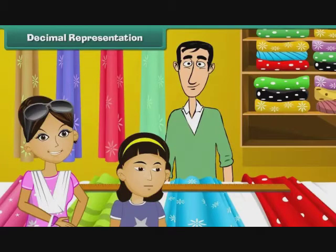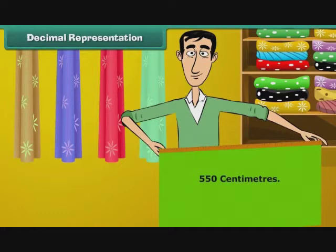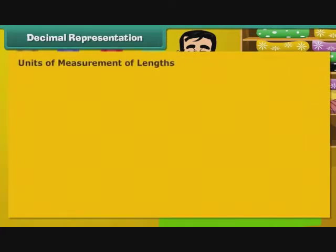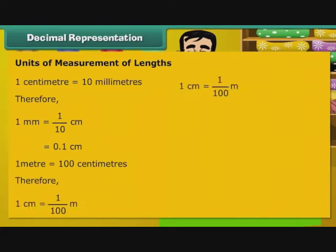Bela accompanies her mother to a saree shop. She asks the shopkeeper the actual length of a saree. The shopkeeper measures it as 550 cm. Bela wants to know if 550 cm can be expressed as metres. To answer Bela's question, let us understand the relationship between the different measures of length. 1 cm is equal to 10 mm. Therefore, 1 mm is equal to 1 by 10 cm, that is equal to 0.1 cm. 1 m is equal to 100 cm. Therefore, 1 cm is equal to 1 by 100 m, that is equal to 0.01 m.